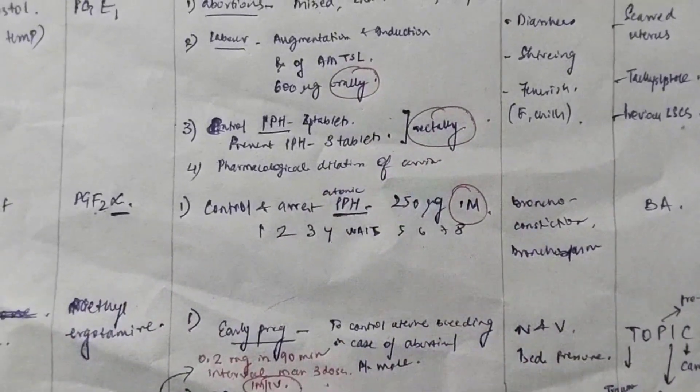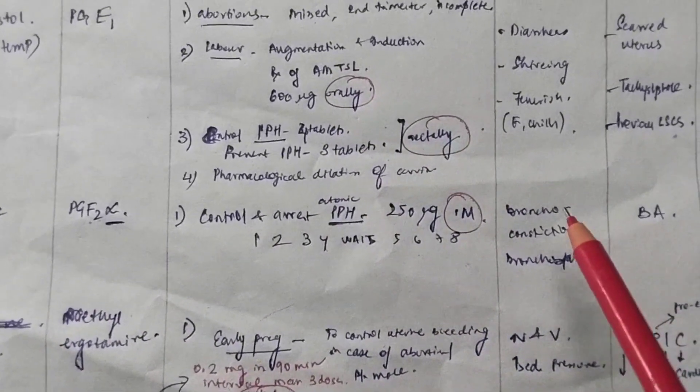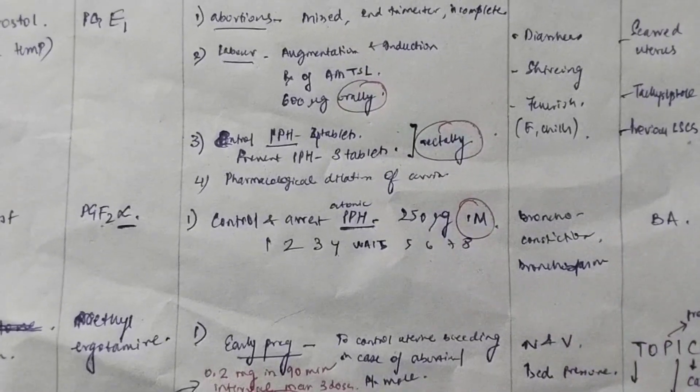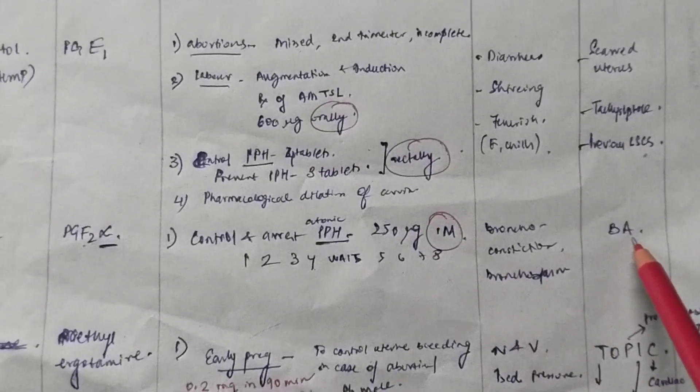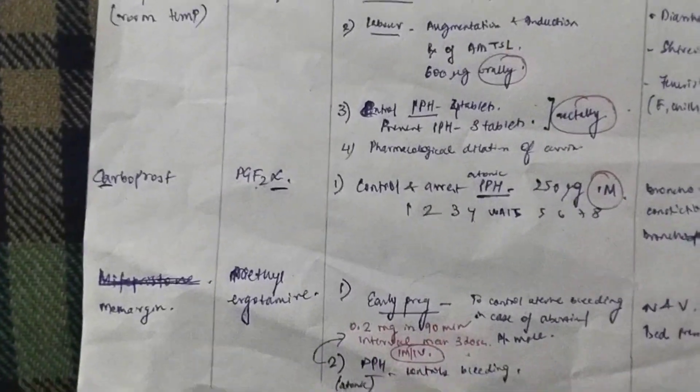And one more important thing. Carboprost causes bronchoconstriction and bronchospasm. So, it is evident that you should never give it in bronchial asthma. It is a contraindication.